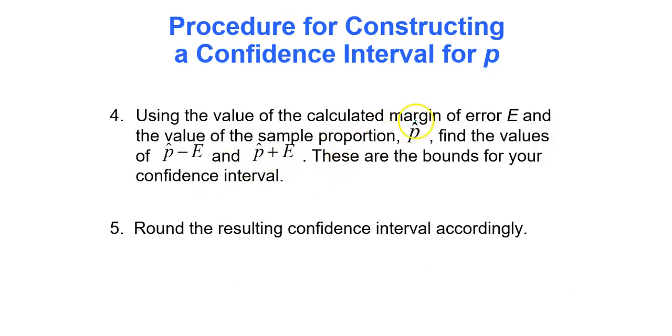Then you'll calculate the margin of error. Step four, we'll take our sample proportion, our point estimate p-hat, and we will subtract the error from it and add the error to it. That's our confidence interval. You have a lower bound, you have an upper bound, you're done. And make sure you round accordingly. If it says round your confidence interval to two decimal places, make sure you round to two decimal places.